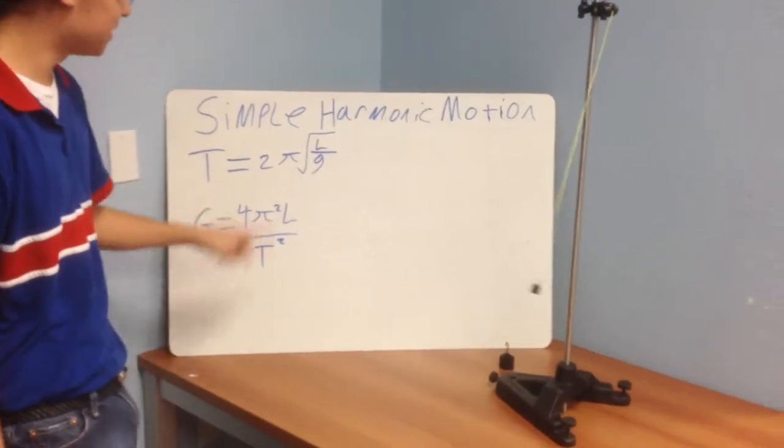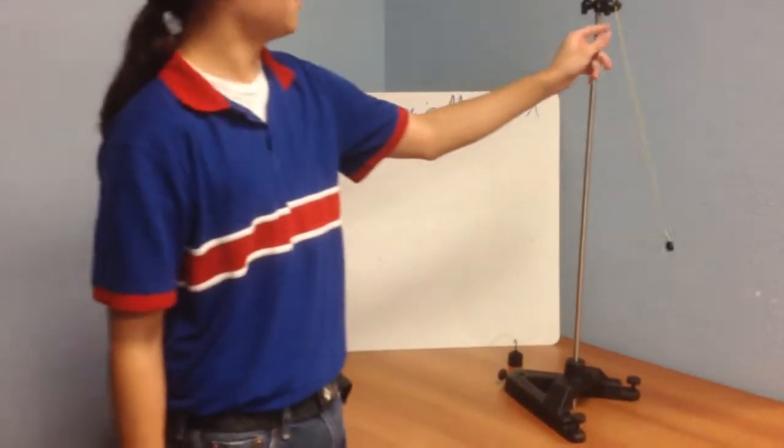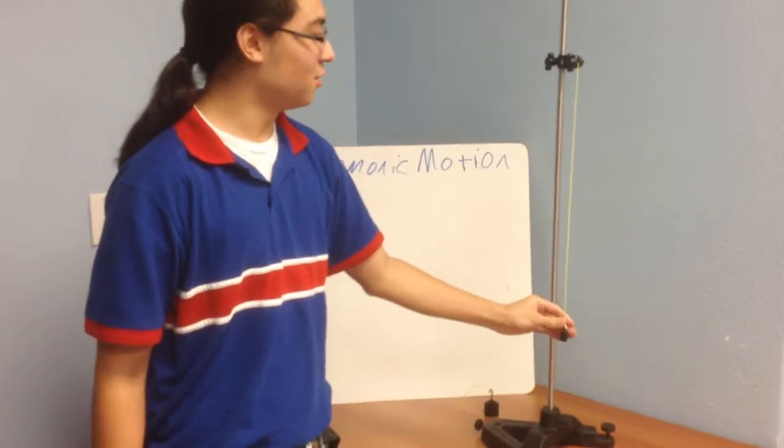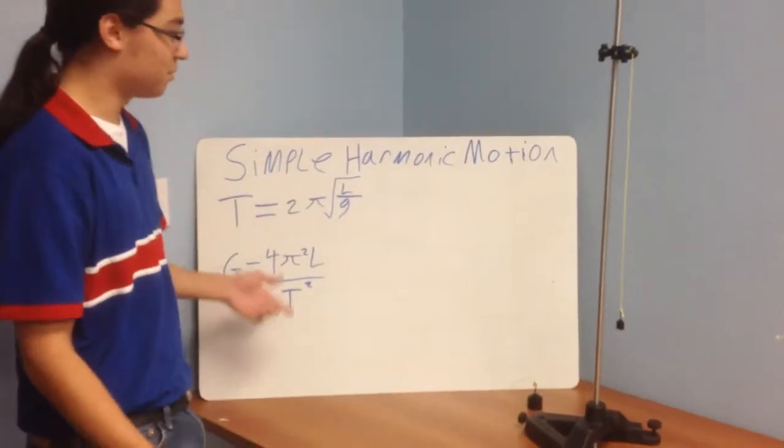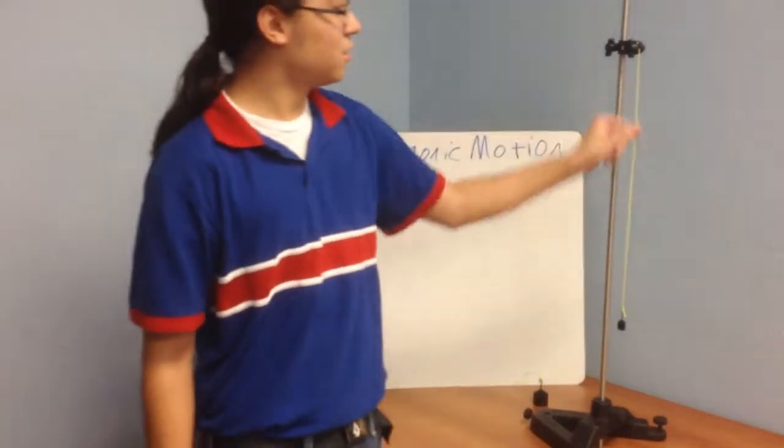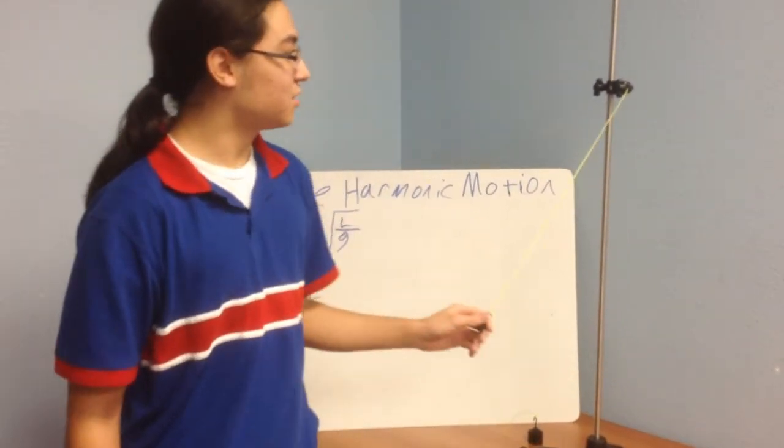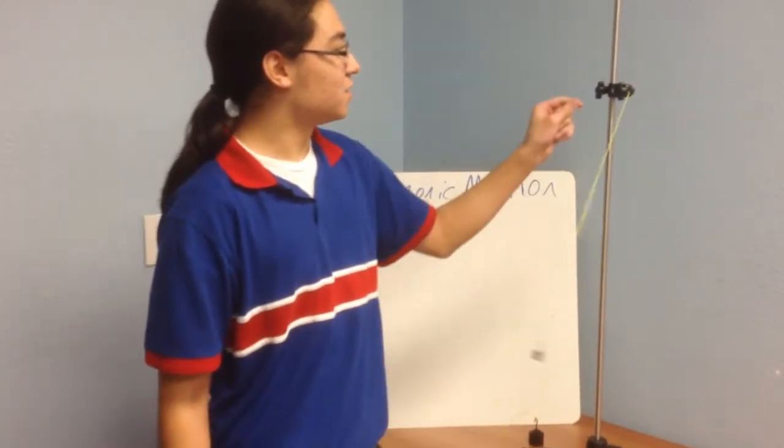Another variable we need is length. Length of a pendulum bob string is the only variable that affects the gravitational acceleration in its number. A longer string will have more gravitational acceleration than a smaller string.